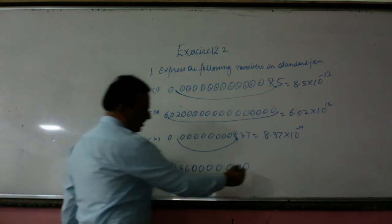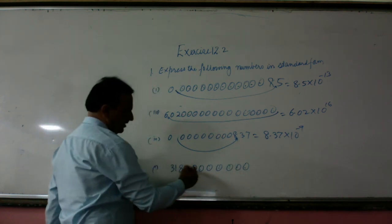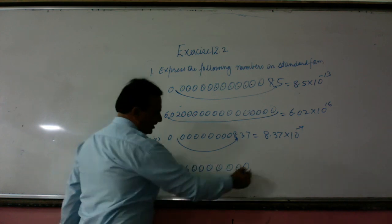So it will be 3.186, counting 1, 2, 3, 4, 5, 6, 7, 8, 9, 10. This point is shifted here.